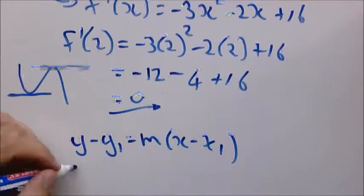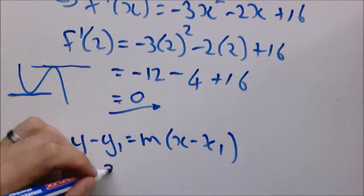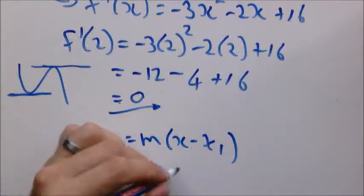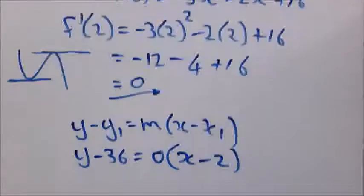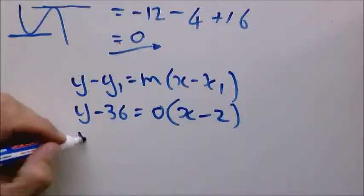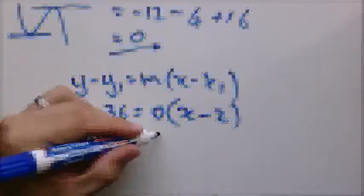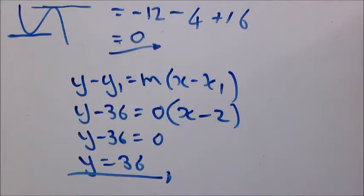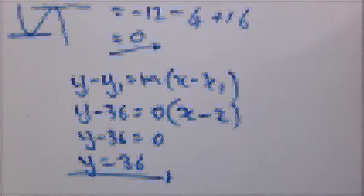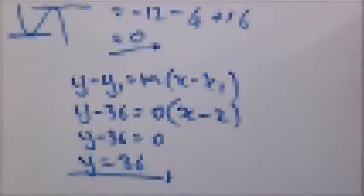We substitute. So Y minus 36 equals 0 times X minus 2. So as you can see that becomes a 0. So you just have that equation left. So that's your equation for the tangent at the turning point. Let's do question 11.